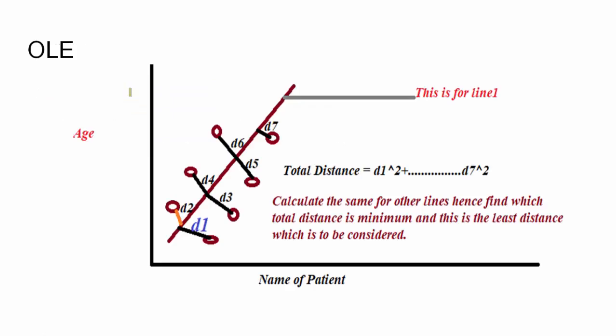If I could see this diagram, you see on the y-axis it is about the age and on the x-axis it is about the name of patient. This is just a dummy graph to show what OLE is. We have the data points. We have drawn line number one. We have drawn this line and we have calculated the distance from this point to all the set of points. So, let this distance be d1, d2, d3, d4 up to d7.